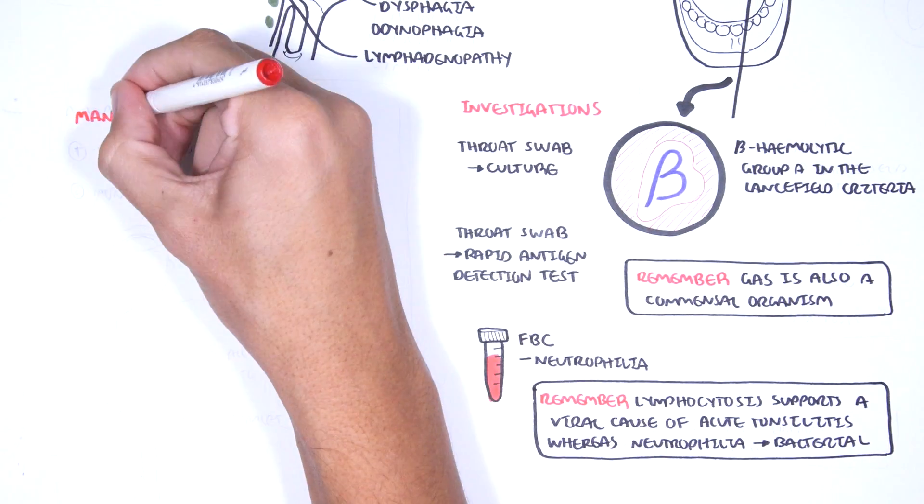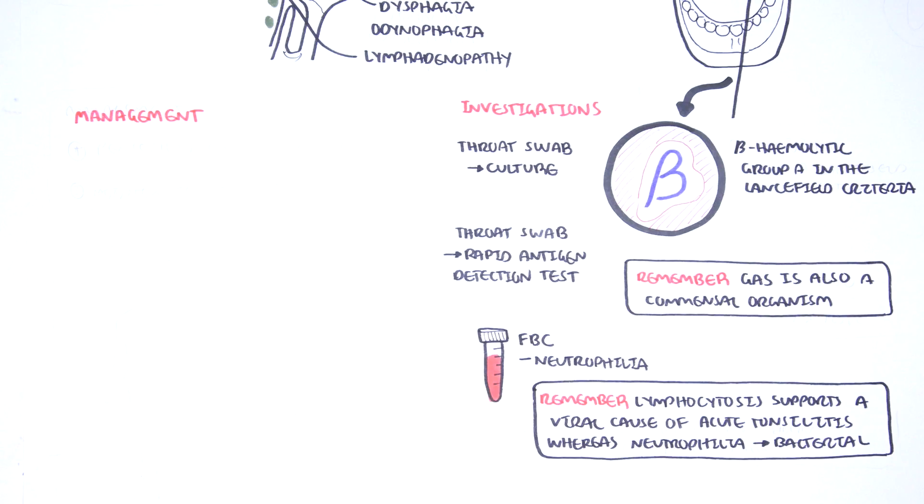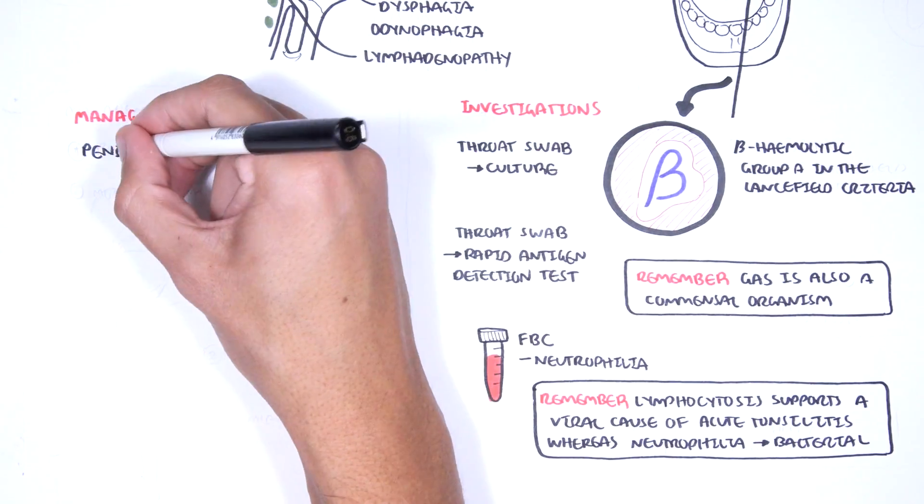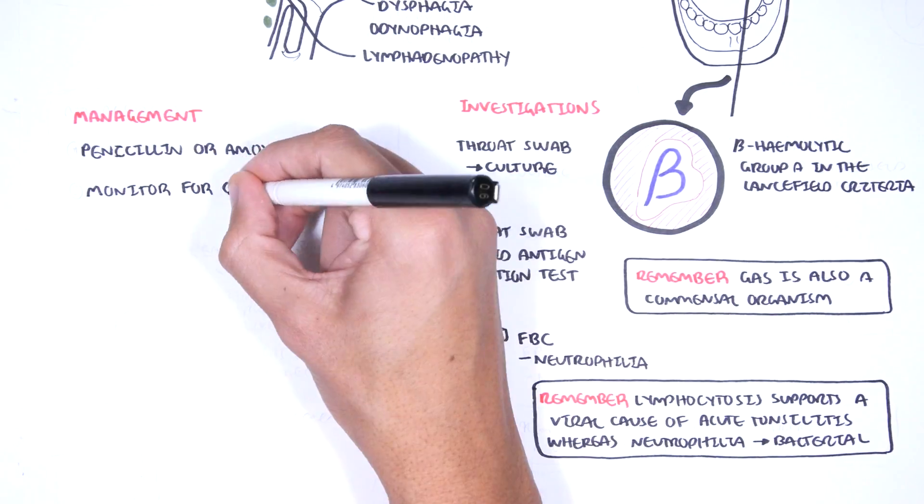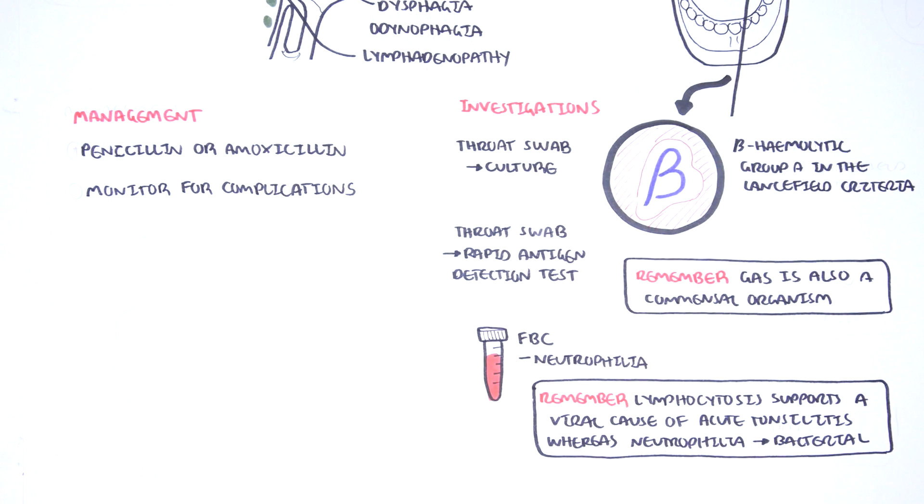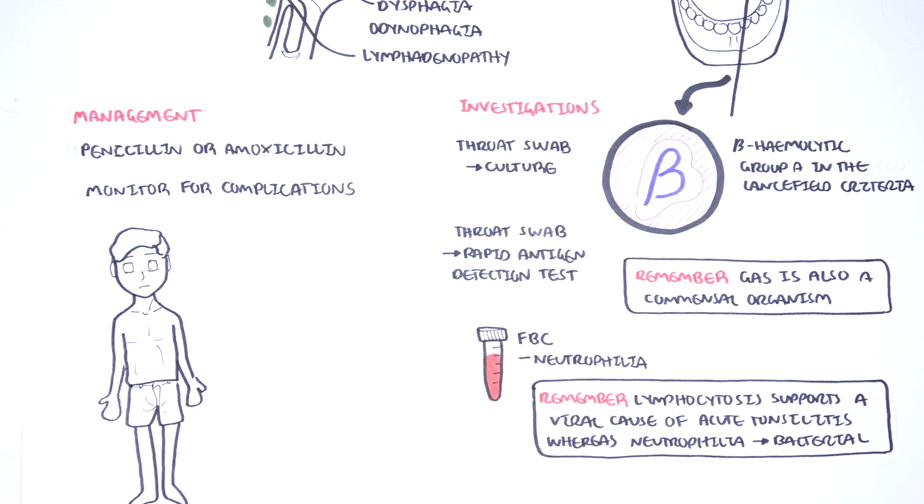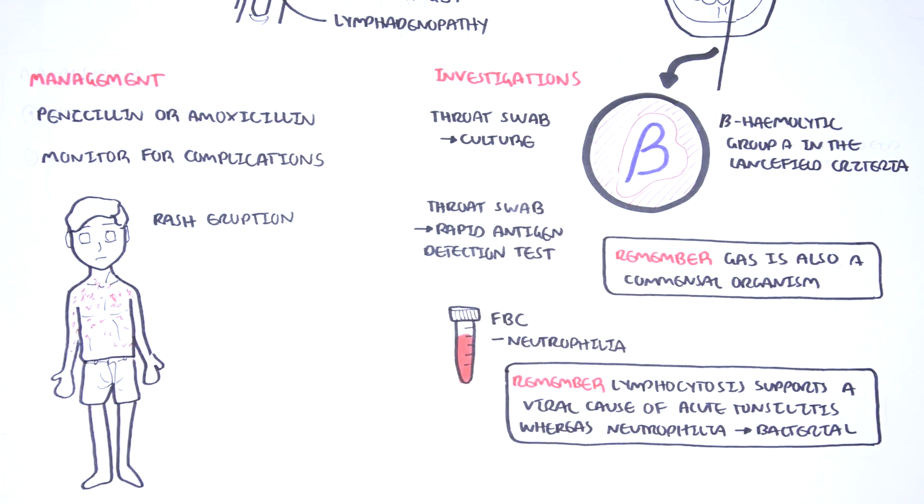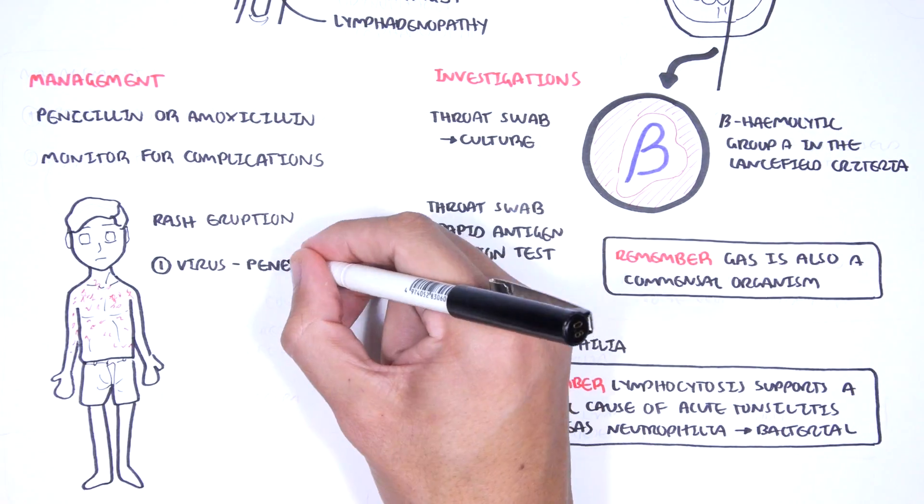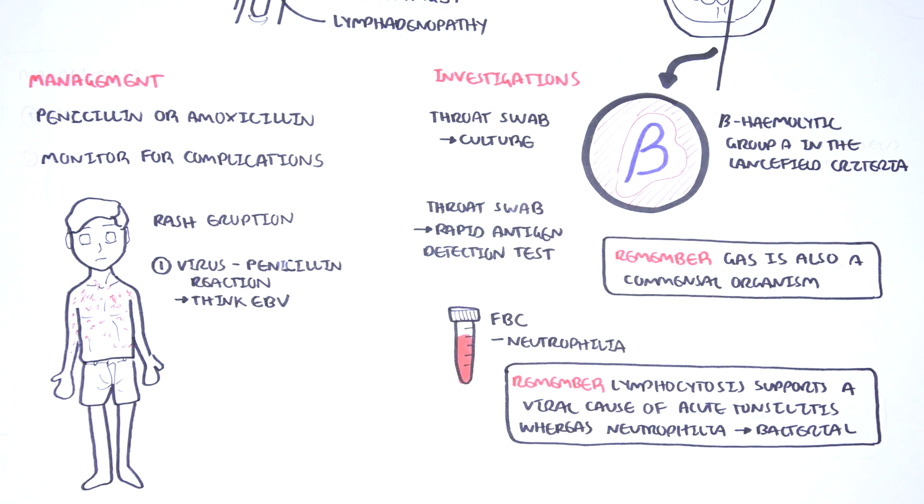Early recognition and management is important to reduce the complications associated with Group A Streptococcus throat infection. The management of Streptococcus throat infection is antibiotics, specifically penicillins or amoxicillin. It's also important to monitor for complications of the antibiotics. Firstly, if a rash eruption occurs, think to yourself, could this be a virus-penicillin reaction, which will support a diagnosis of Epstein-Barr virus tonsillitis rather than bacterial tonsillitis, in which case the antibiotics should be stopped.